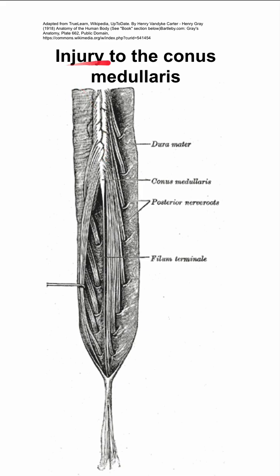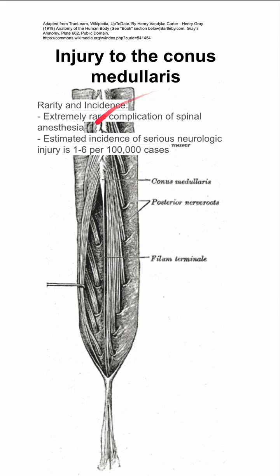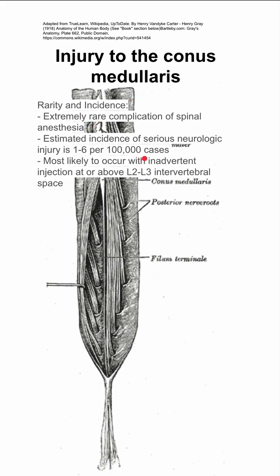Here are some notes on injury to the conus medullaris. This is an extremely rare complication of spinal anesthesia with an estimated incidence of serious neurologic injury at 1 to 6 per 100,000 cases.